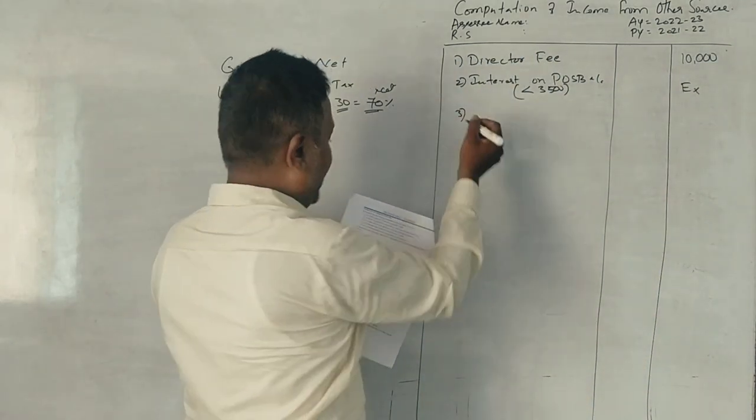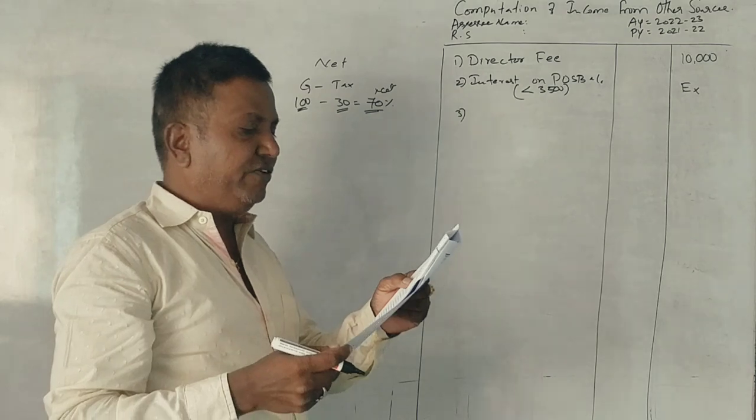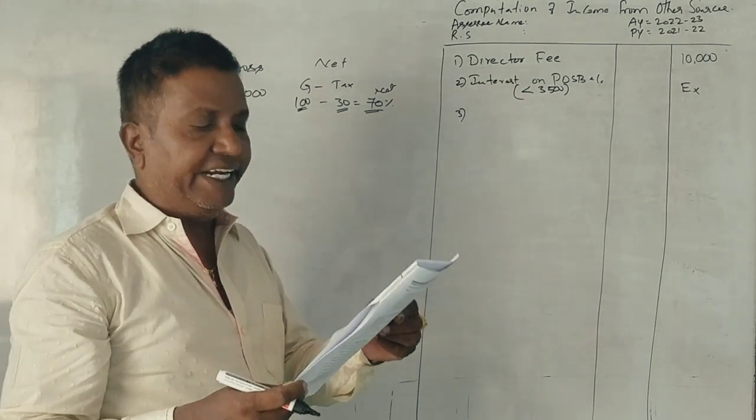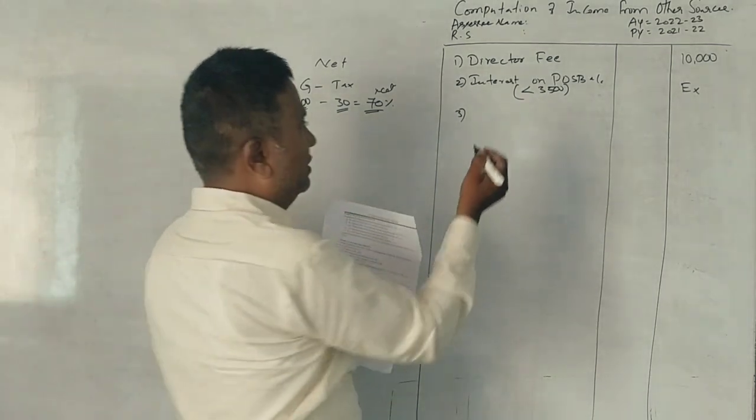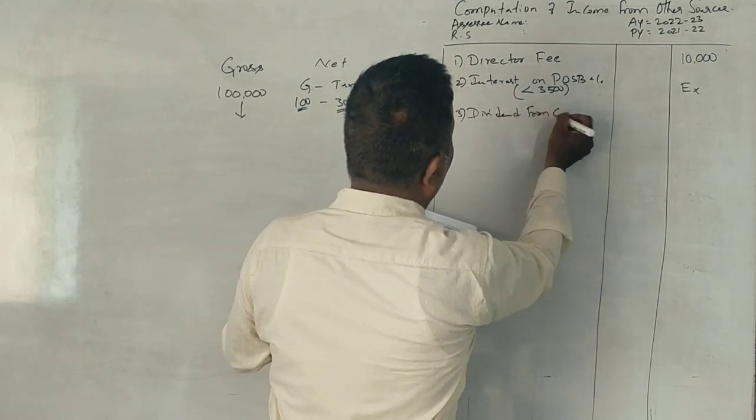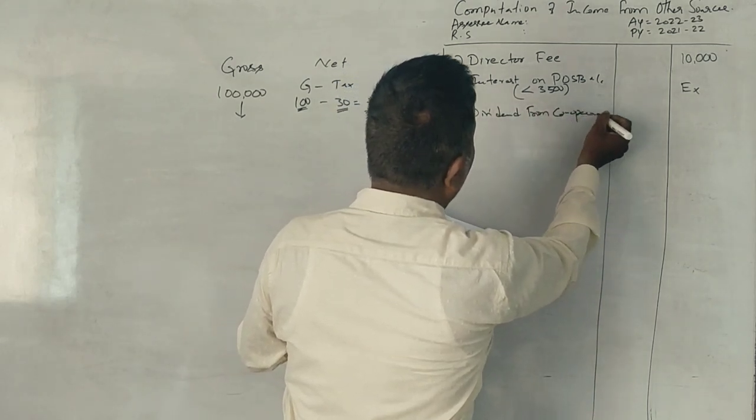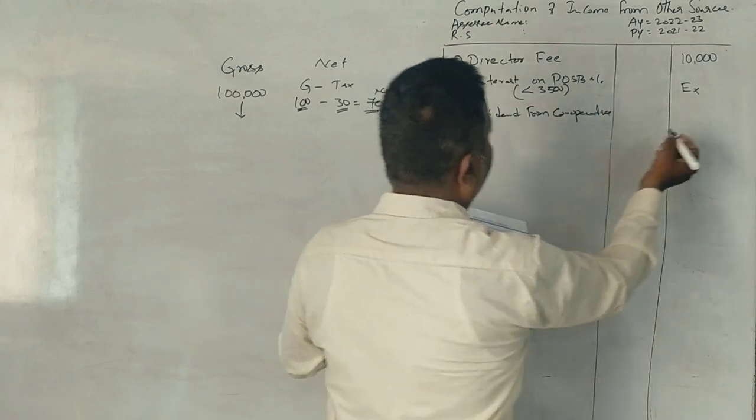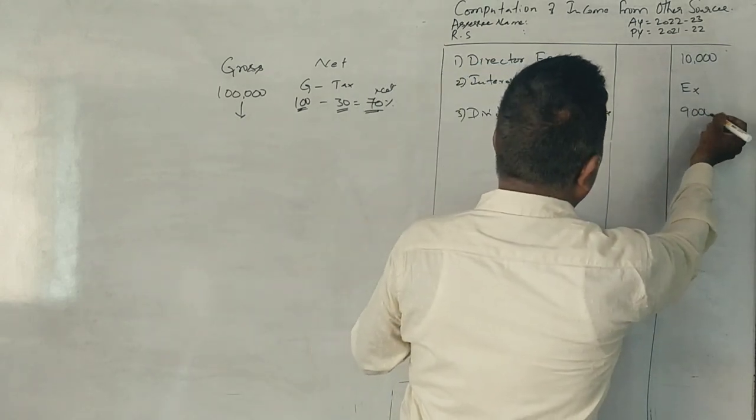Third point. Dividend received from cooperative society, fully taxable. Dividend from cooperatives, 9,000 rupees, fully taxable.